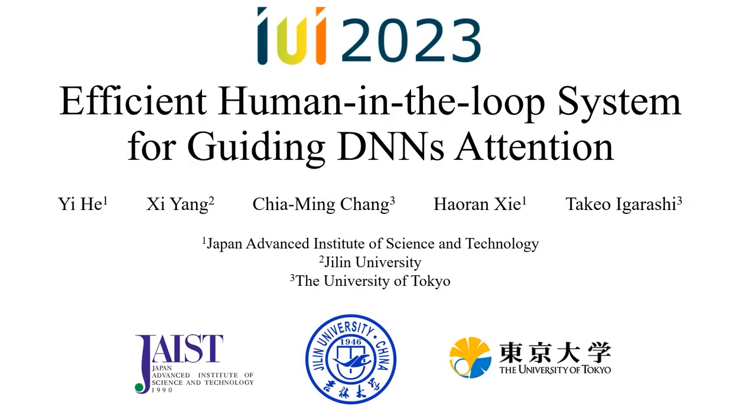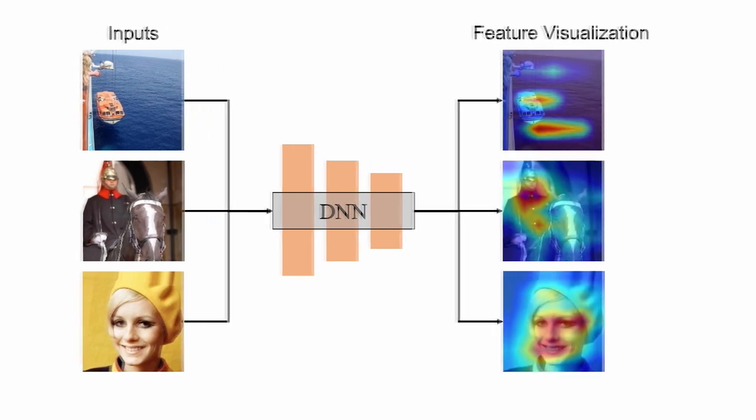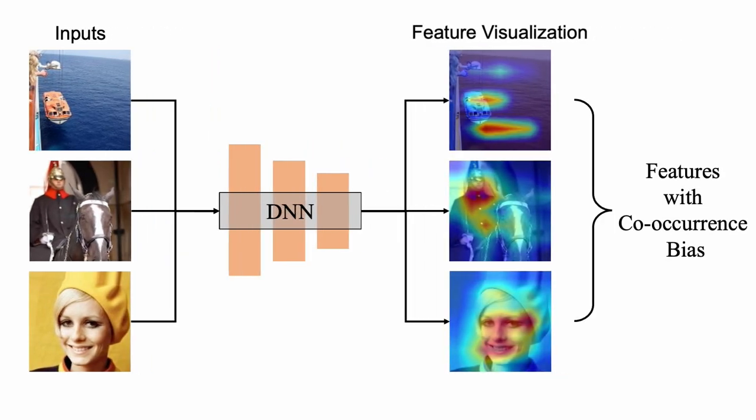Efficient human-in-the-loop system for guiding DNN's attention. Co-occurrence bias among several feature elements such as boat and water leads to the feature that we want to extract often accompanied by some other features in the context.